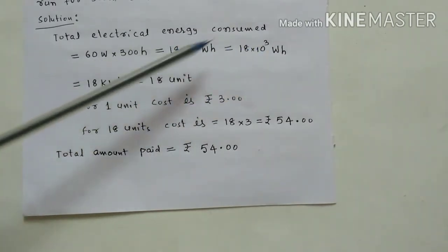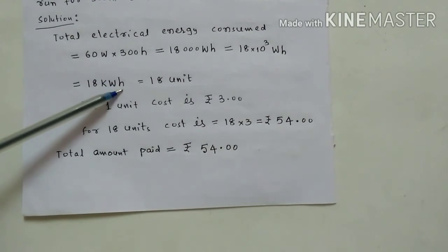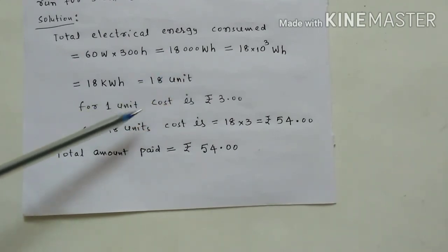So 18 kilowatt hour. Kilowatt hour is one unit. So 18 kilowatt hour is 18 unit consumed.